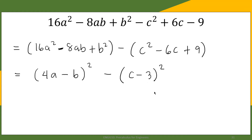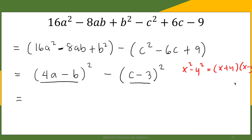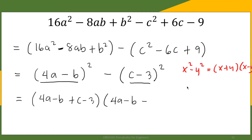Now if we look at these two terms, we have a difference of two squares. Recall that x squared minus y squared equals (x plus y)(x minus y). Patterning our answer from that, the first expression is (4a minus b) and the second is (c minus 3). So the factored form is (4a minus b plus c minus 3) times (4a minus b minus c plus 3). That is the complete factored form of the given polynomial.